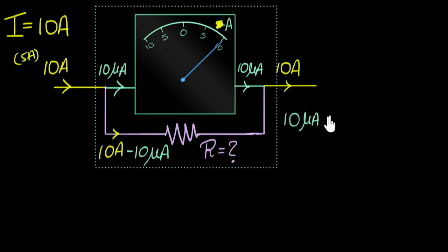I don't know what that resistance is. Let me just call that RG. And that should equal the voltage across this resistor, which is the current through this resistor. That's going to be 10 amps minus 10 microamperes times the resistance. And I'm done. From this, the resistance becomes.